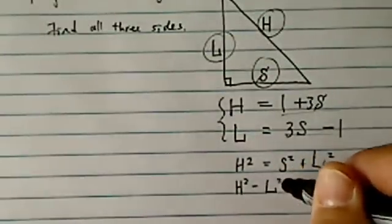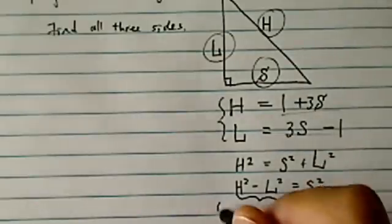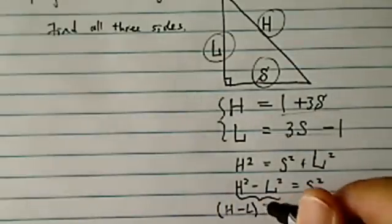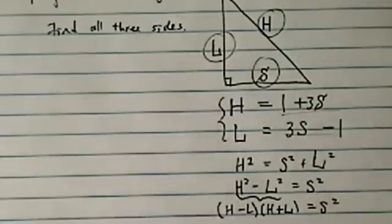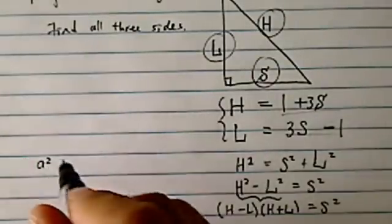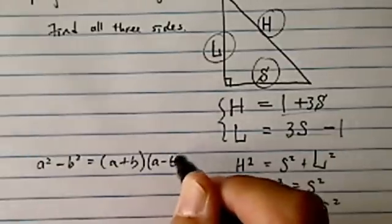If we move L squared over, we'll end up with a difference of squares: H minus L times H plus L equals S squared. It's referred to as difference of squares because A squared minus B squared equals A plus B times A minus B.